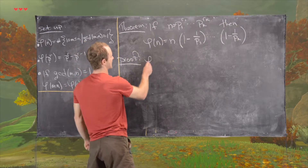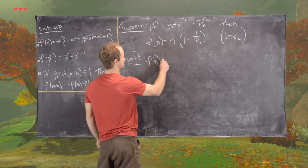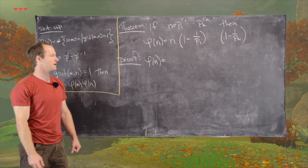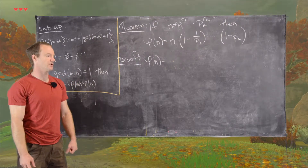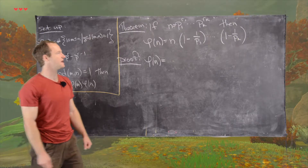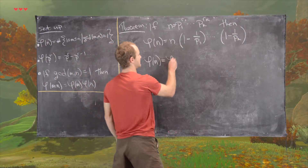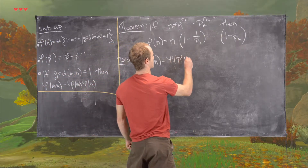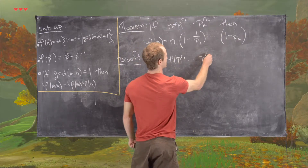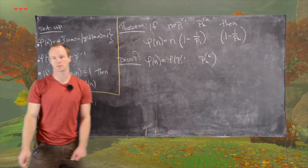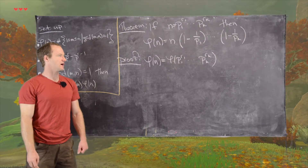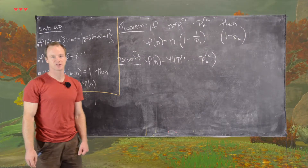So the proof is as follows. It's really just a string of equations — there are not really any tricky arguments to it. So we'll take phi of n, and that's the same thing as phi of p1 to the r1 all the way up to pk to the rk. We just replaced n with its prime factorization.